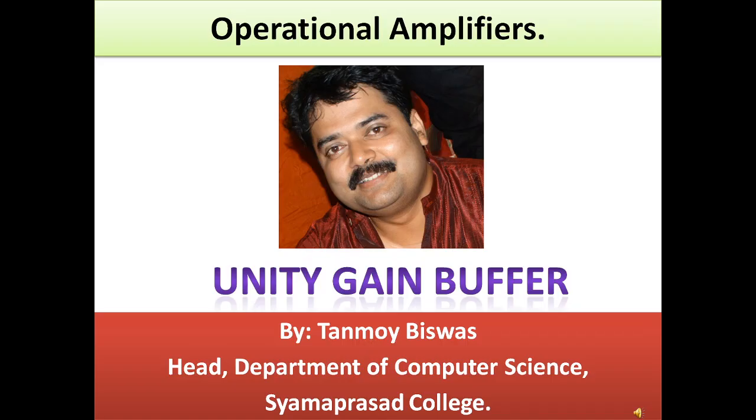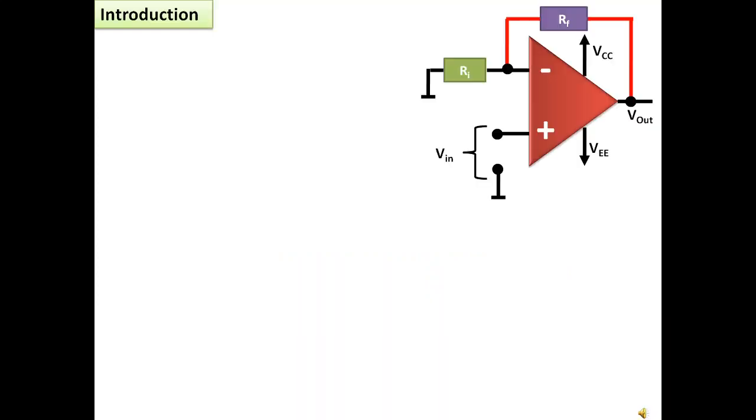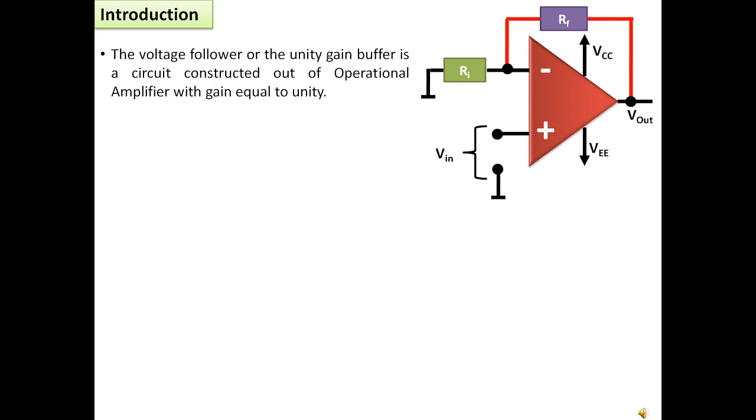Dear friends, today our discussion is related to unity gain buffers using operational amplifiers. The voltage follower or the unity gain buffer is a circuit constructed out of operational amplifier with gain equal to 1.